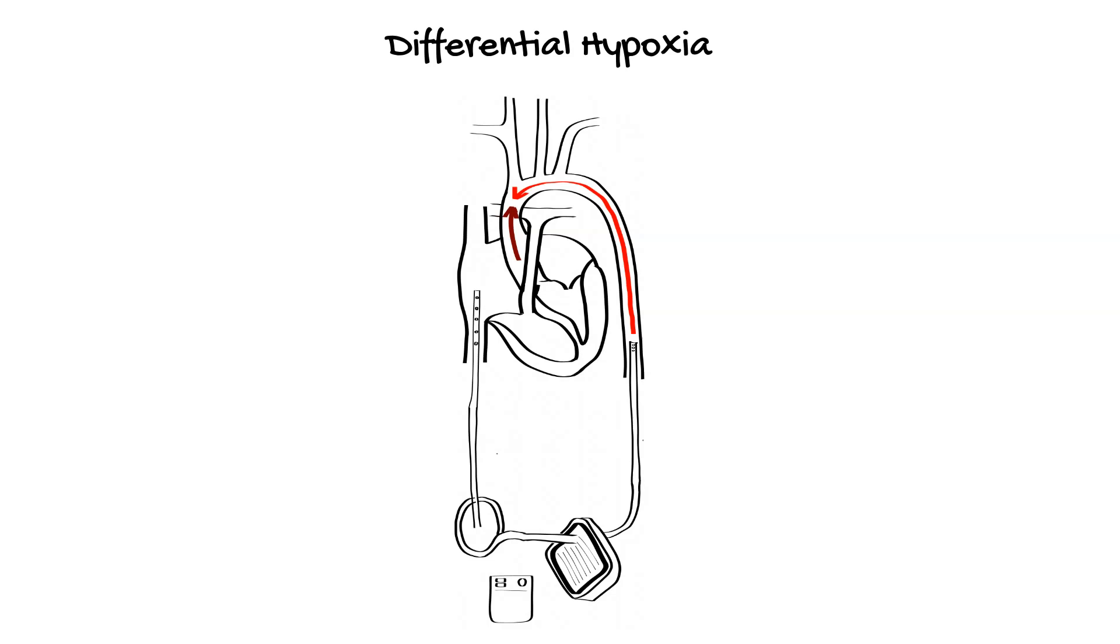If the native lungs are poorly oxygenating the native cardiac output, then hypoxic blood will be pumped into the aorta. The relative proportions of native cardiac output to ECMO flow will determine where the mixing point will be in the aortic arch.